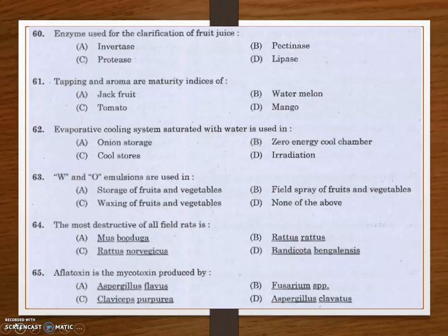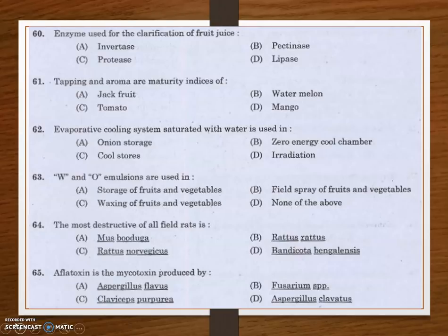Next question: W/O emulsions are used in — storage of fruits and vegetables, field spray of fruits and vegetables, waxing of fruits and vegetables, or none of the above? A W/O emulsion is water droplets suspended in a continuous oil phase. The answer is waxing of fruits and vegetables — W/O emulsions are used in waxing of fruits and vegetables.